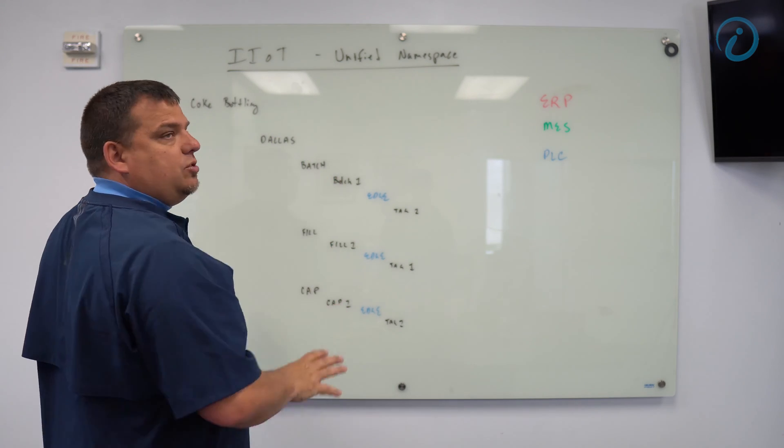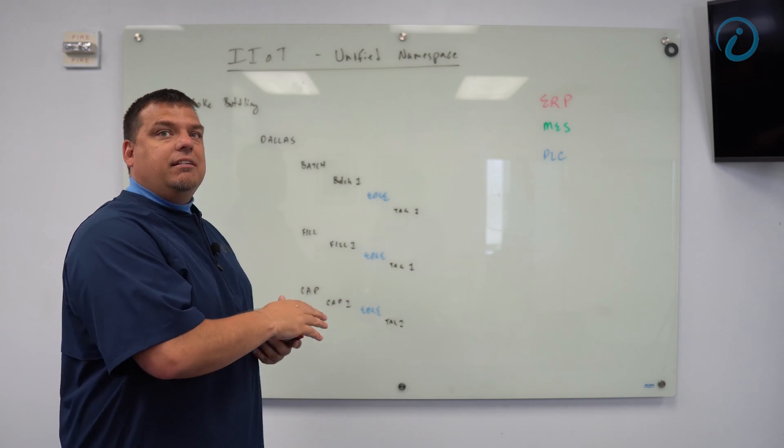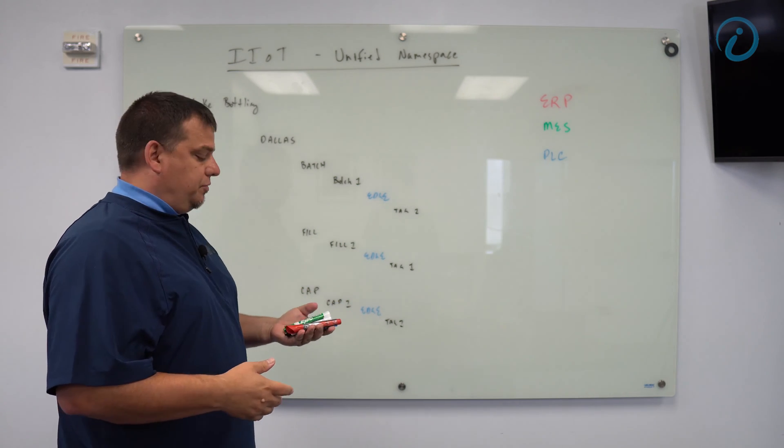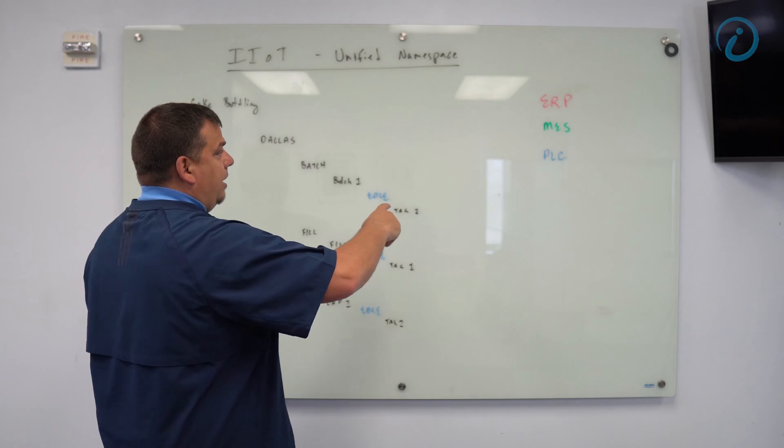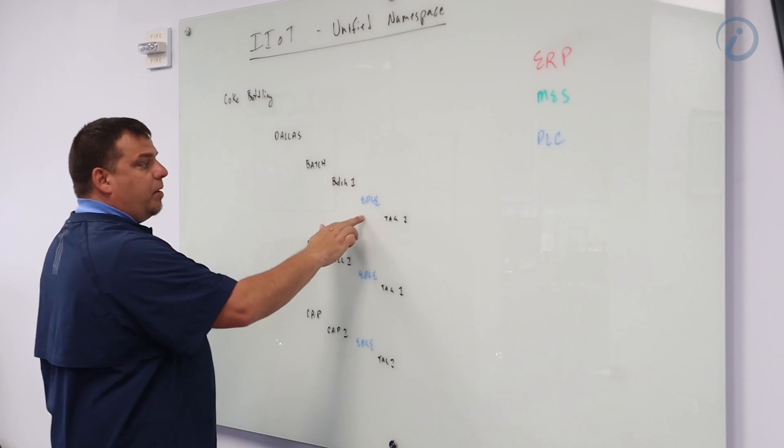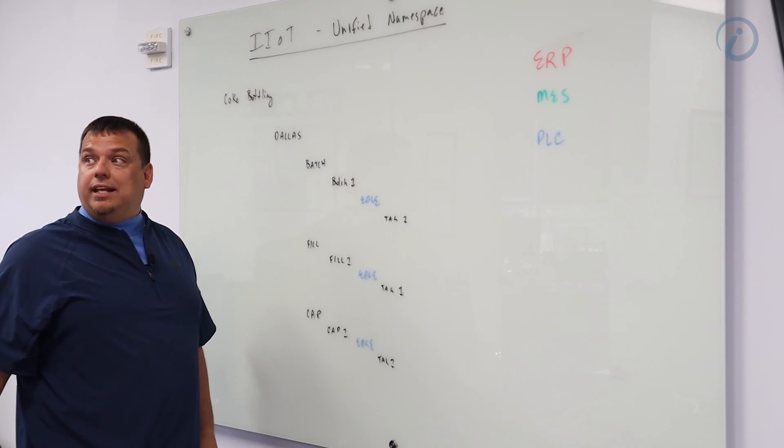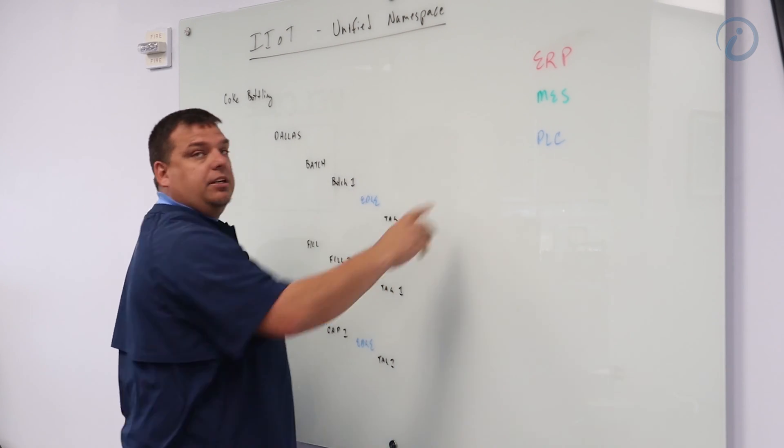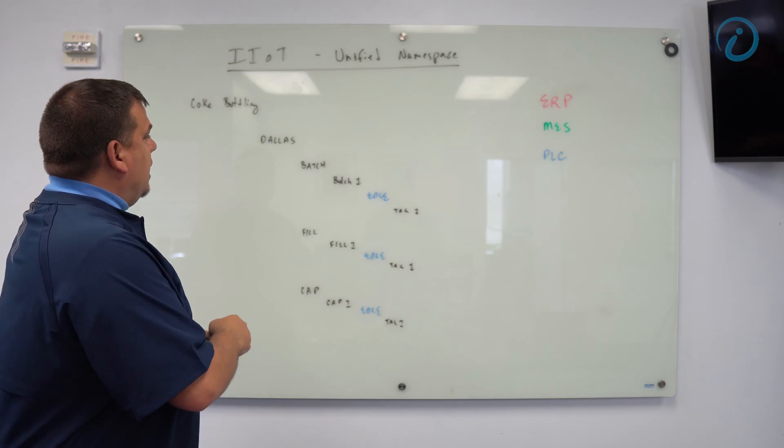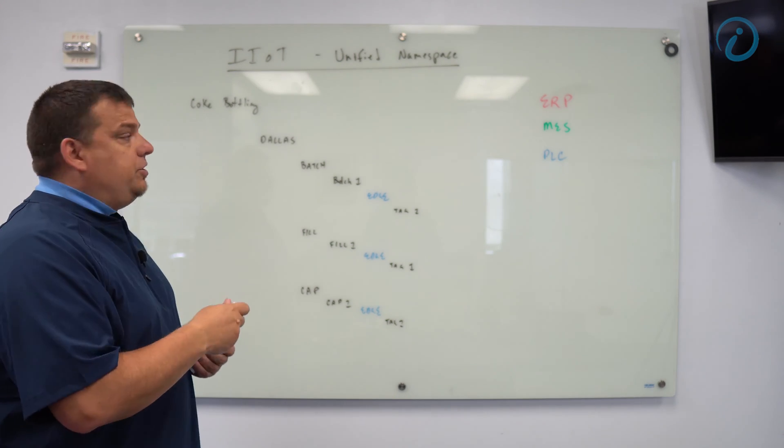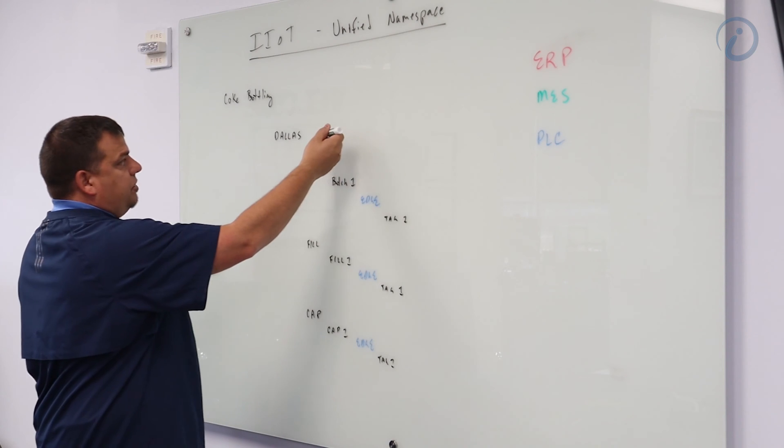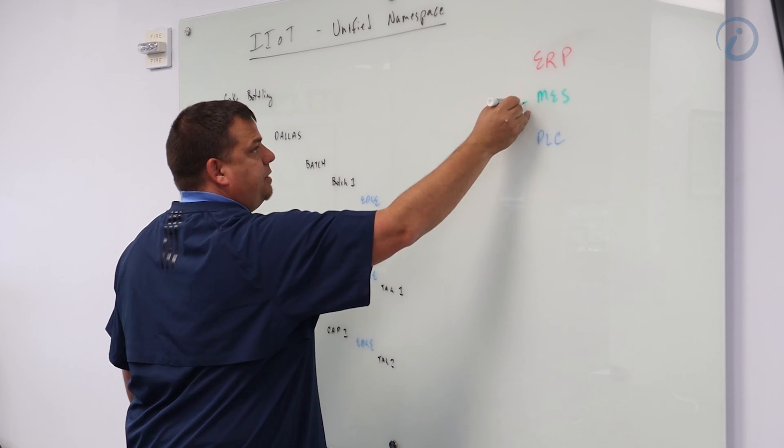In our unified namespace, we're not going to do that. This is the root namespace. This is the single source of truth for all data. So right now, we have our PLCs are publishing into this namespace already. Our folders line up with our PLCs that live in the field. But we also, what we do is we will create, our MES system will also publish into the namespace.